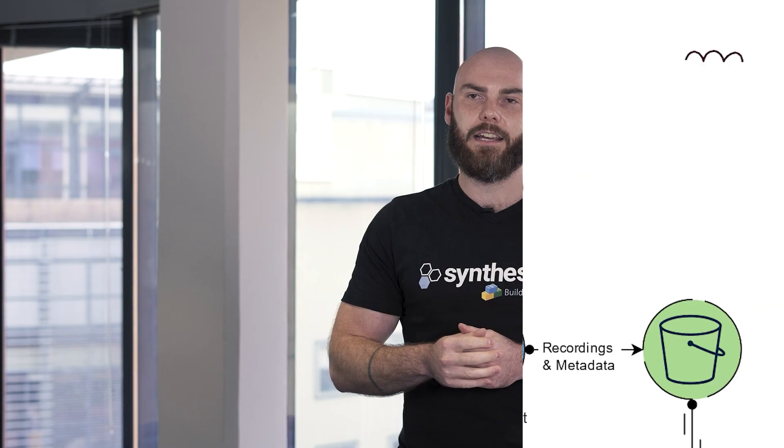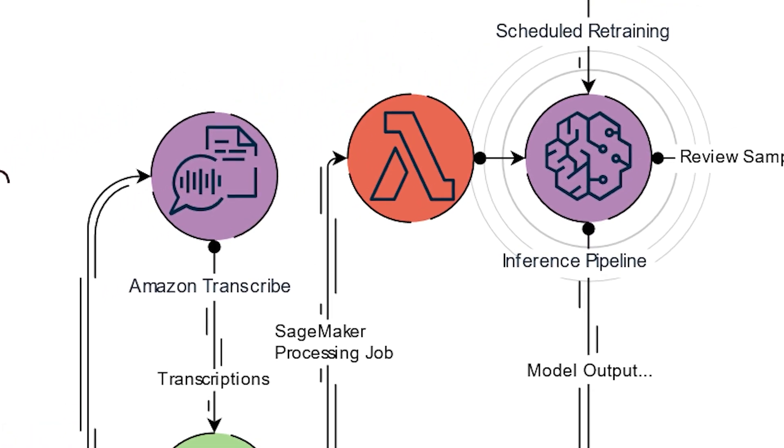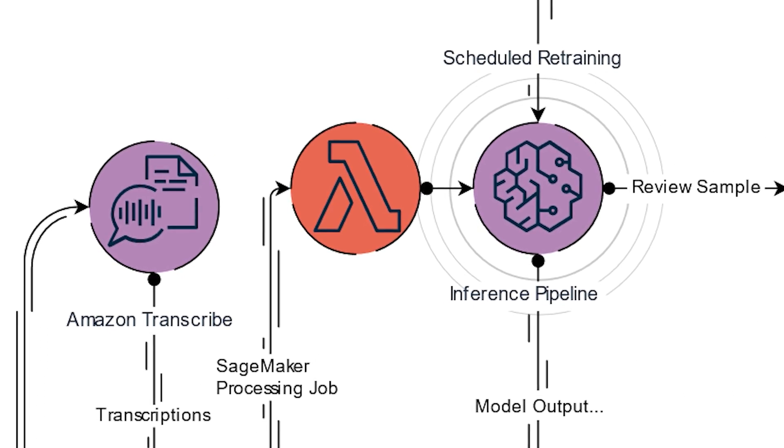Apart from speech-to-text capabilities, Transcribe also has speaker diarization — it identifies the different speakers in a conversation so we can separate them into different channels. This is useful if you don't have sign-off to process the language spoken by your clients due to the POPI Act and data privacy concerns. In the case of quality assurance, we actually only care about the agent side of the conversation. Once transcription is completed, the text version of the conversation is copied to a different data repository, where it waits for the inference pipeline to be kicked off.